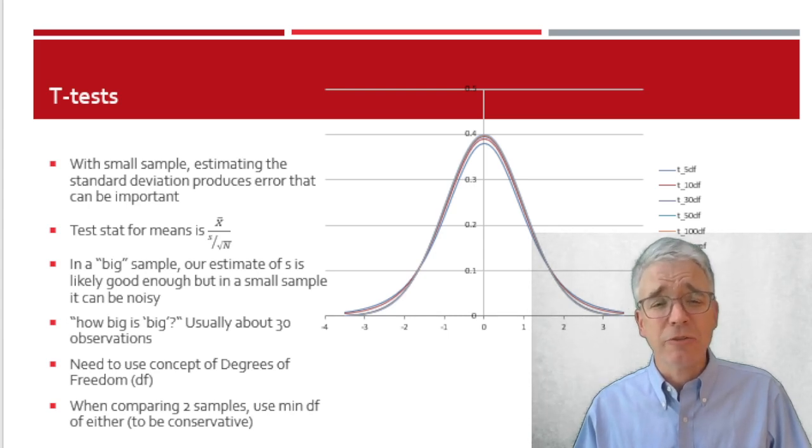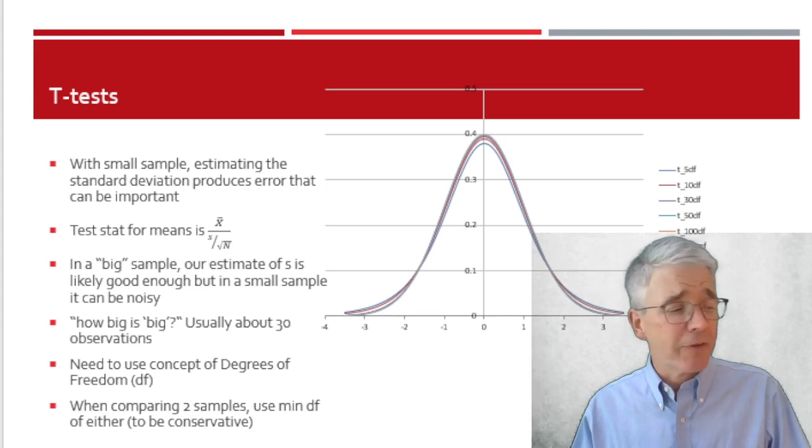If you're using small samples, then the test statistic has a t-distribution. You can see in the picture there, the t-distribution depends on degrees of freedom, and with fewer degrees of freedom, it has fatter tails.